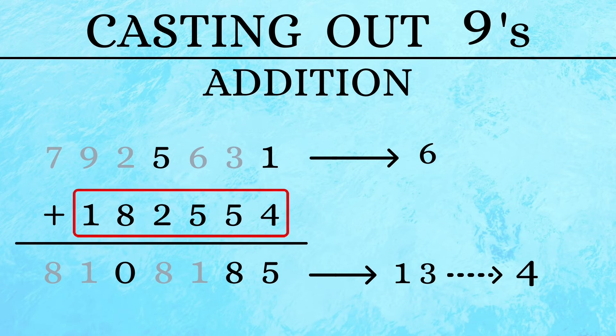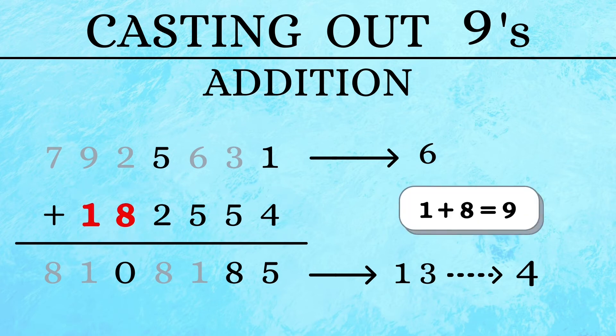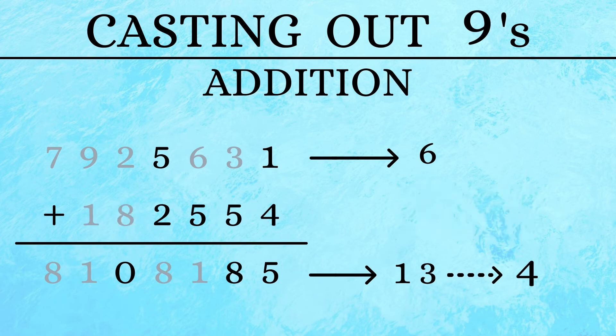The second number in question. Here 1 and 8 add up to a 9. 5 and 4 also add up to a 9. We are left with 2 and 5 which add up to make a 7.